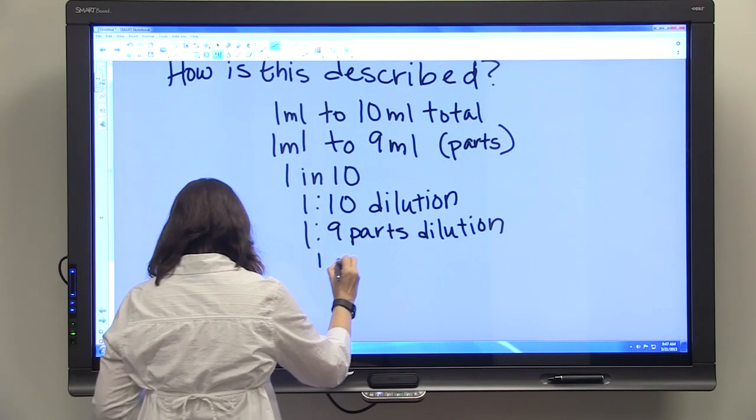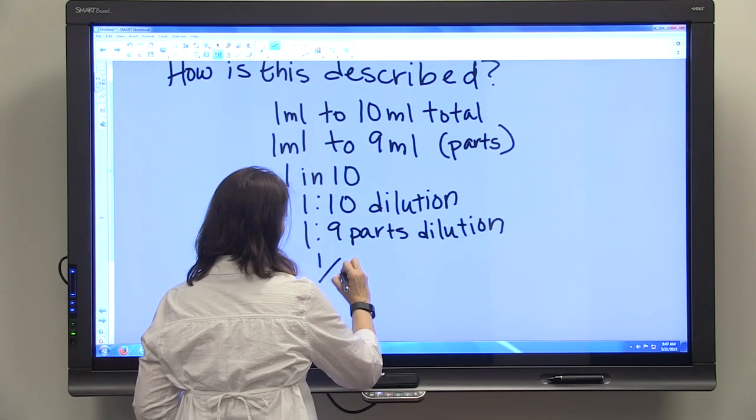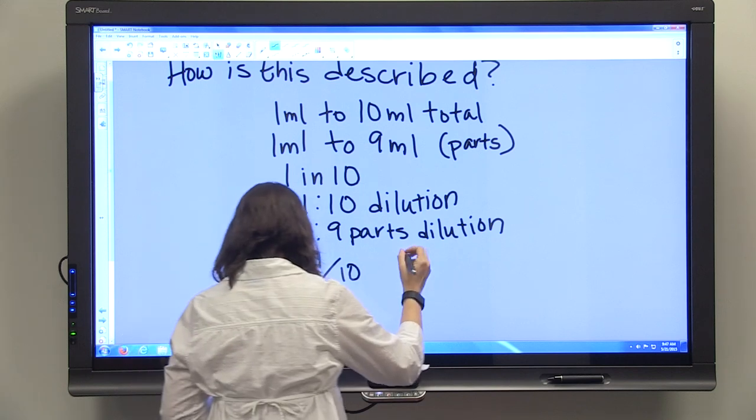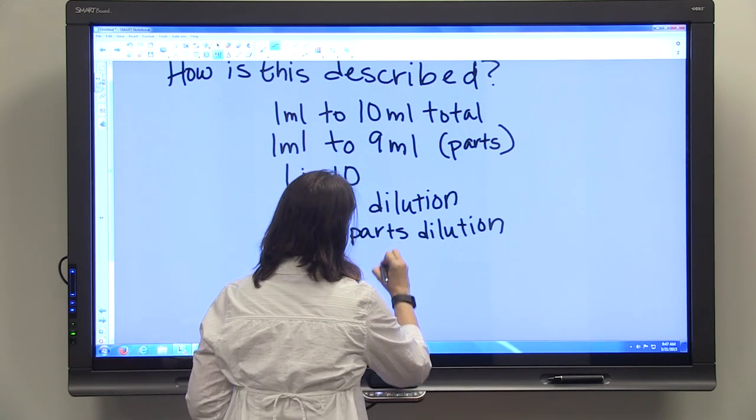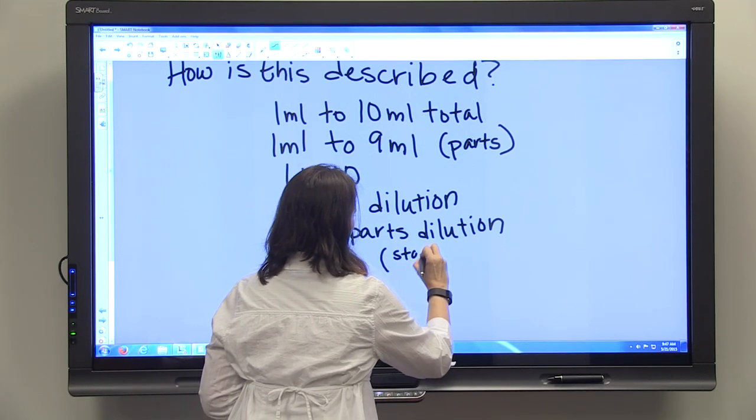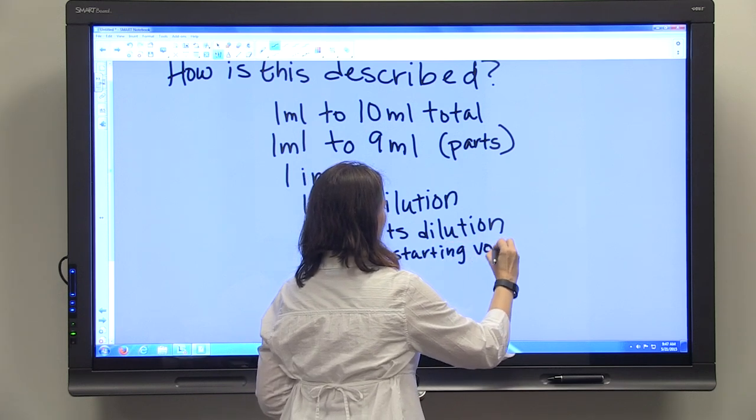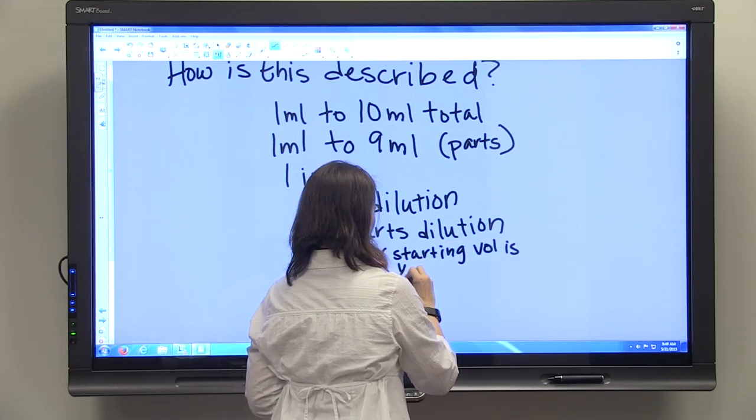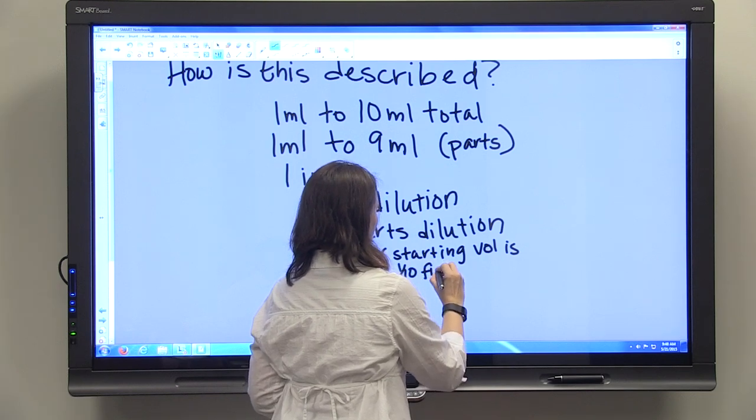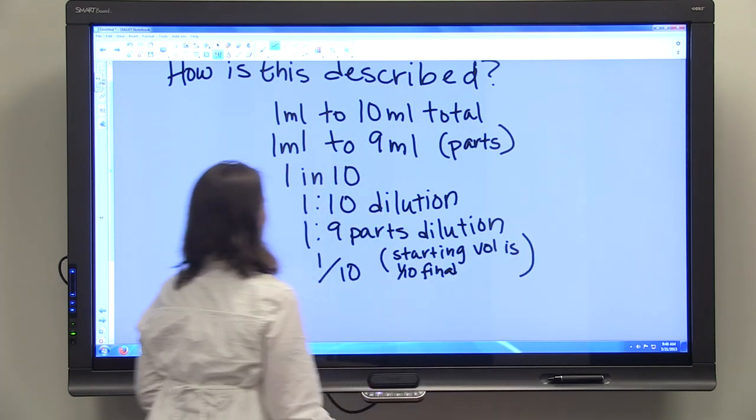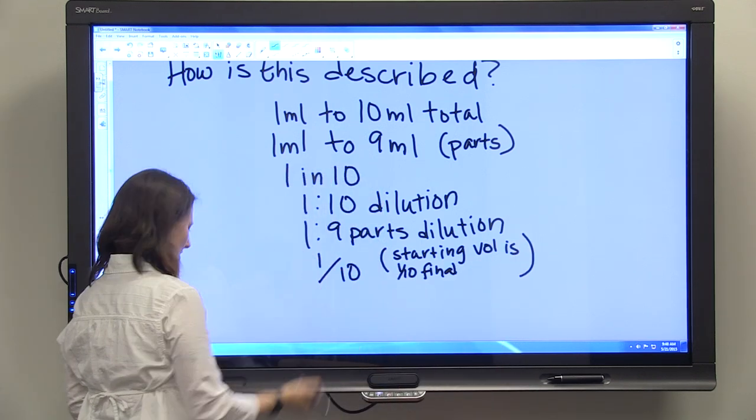It can be described as a 1 to 10 dilution because the starting volume is a tenth of the final volume. So, 1 ml out of 10 mls.